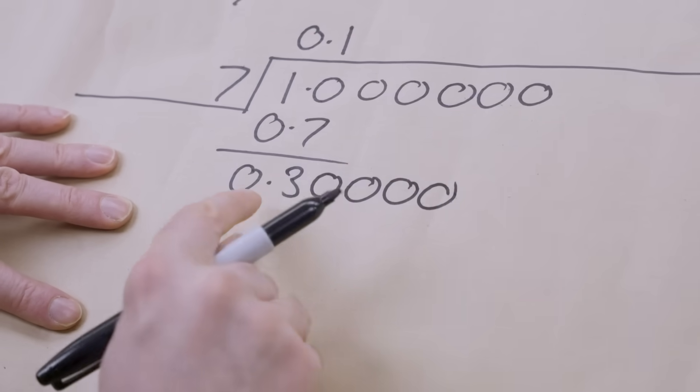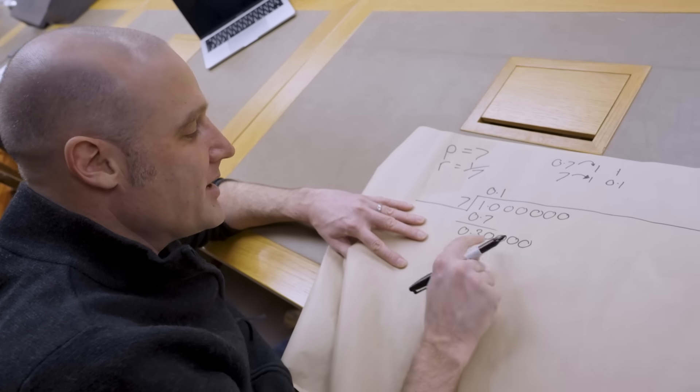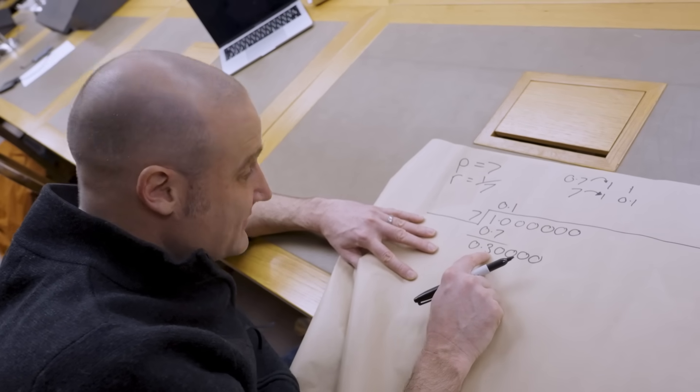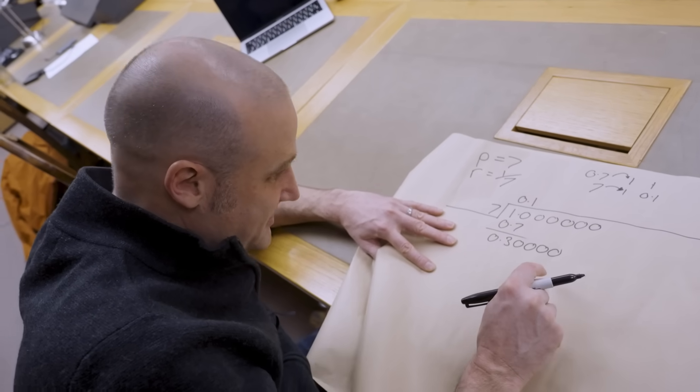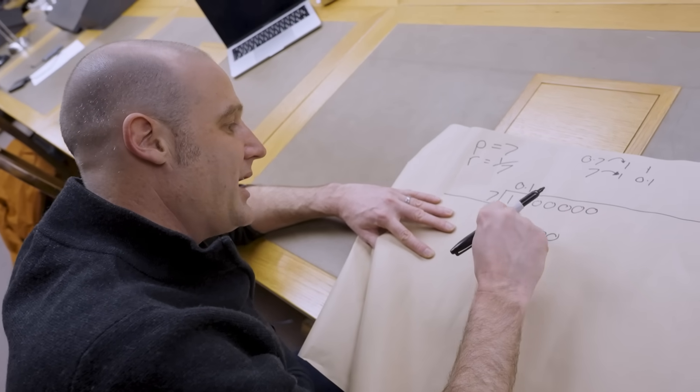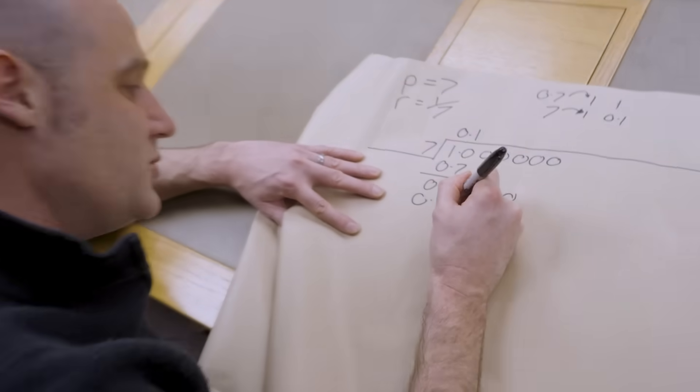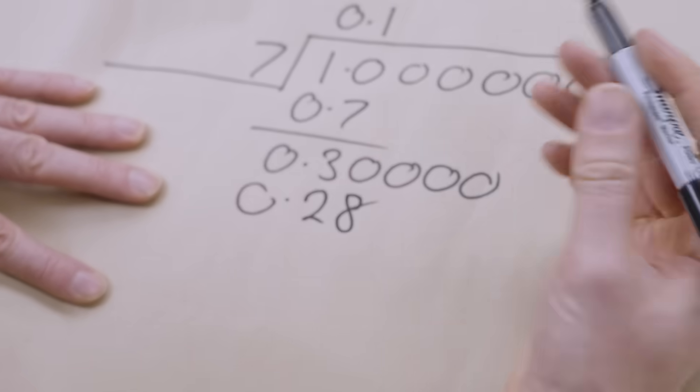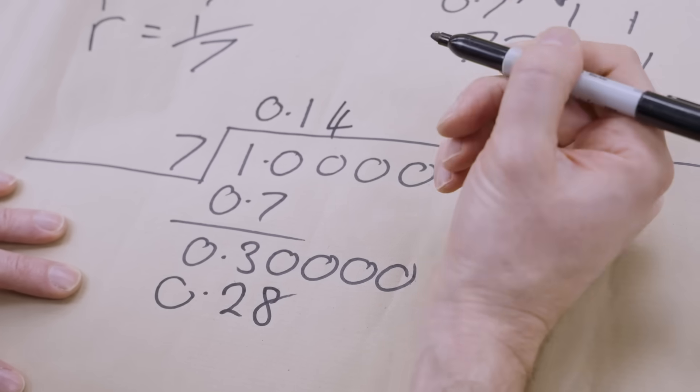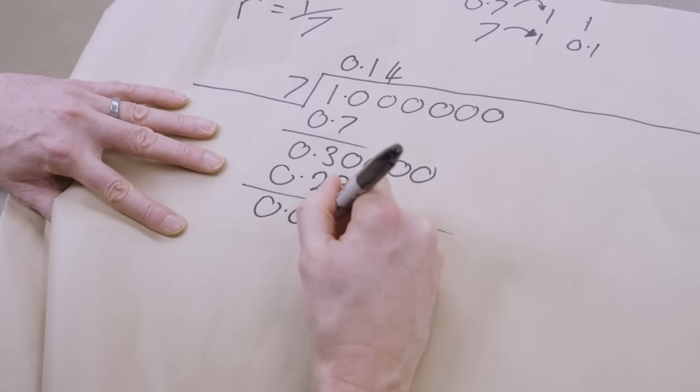We just need to know now, we've already covered this bit, how many times 7 goes into that? And now we're like, okay, we can't do, 7 doesn't go into 0.3, 0.7 doesn't go into 0.3, but 0.07 does. And so you go, how many times does 0.07 go in? Well, 4 times 0.07 is 0.28, and that's 4 times it. So we put it up here, and then we subtract that off, and we've got 0.020.